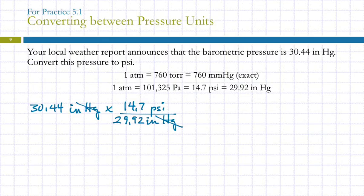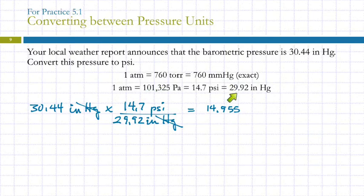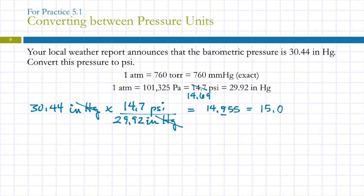The calculation is 30.44 times 14.7 divided by 29.92. The calculator gives many digits. For significant figures: 14.7 is not exact, 29.92 is not exact, so we have three significant figures. The book rounds to 14.7, but it's actually 14.69. Rounding to three sig figs, we get 15.0 PSI.